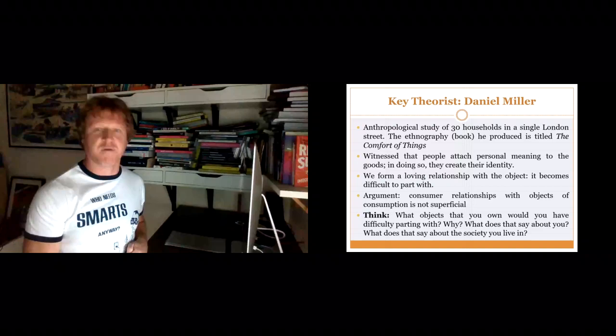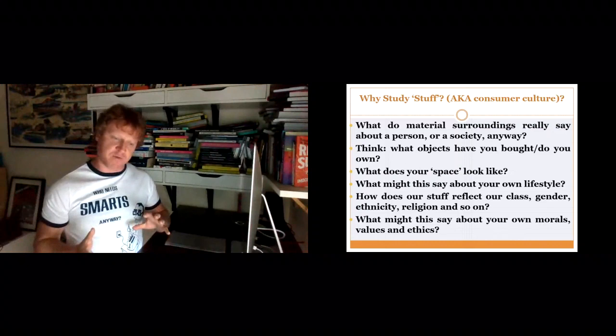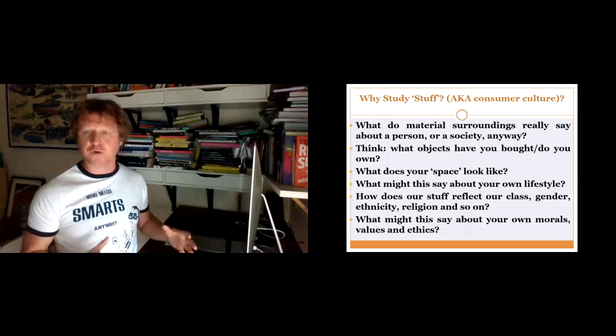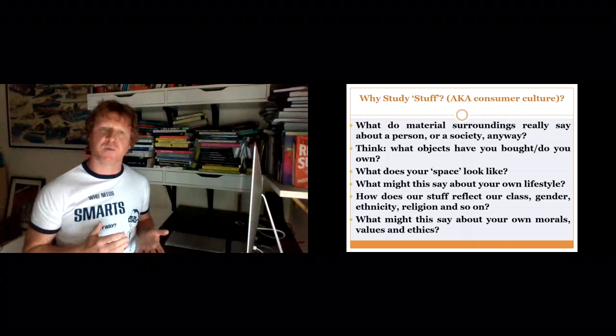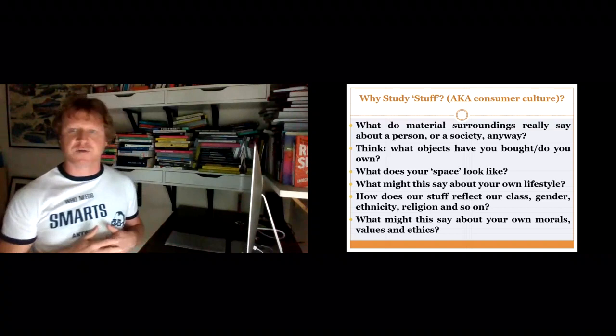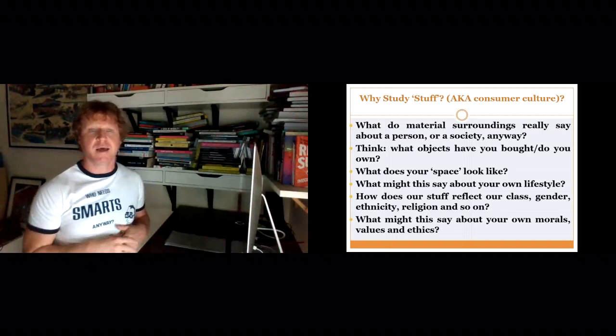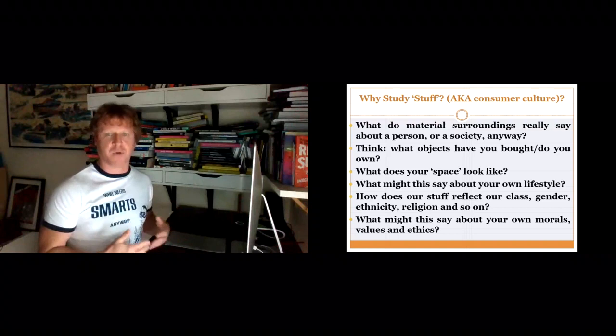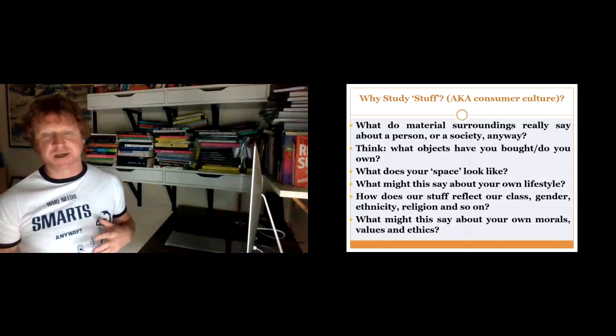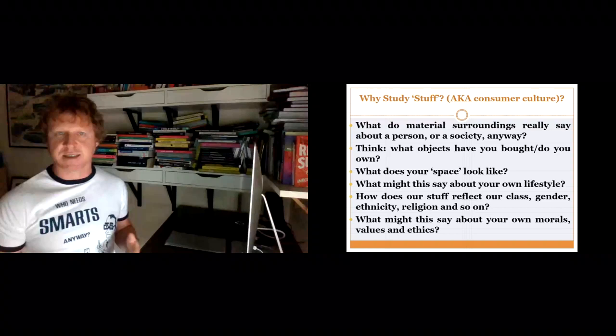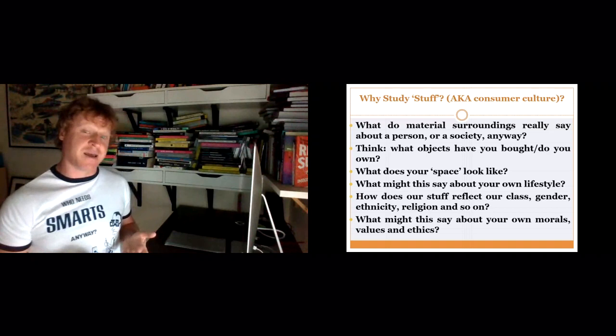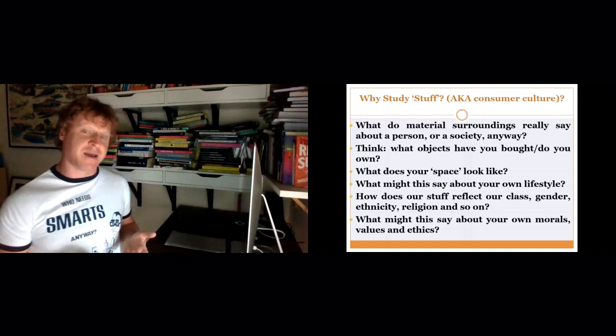So I think that's really worthwhile checking out if you want to move beyond the pessimism of the Frankfurt School. So in the next section, what I'm going to do is talk about some other points of view that look at consumer culture a little bit more in terms of relations between different groups and the different meanings they have. So in terms of asking some sociological questions here, why we should study stuff, i.e. the things we consume. What do material surroundings really say about a person or society anyway? What objects have you bought and what do these things say about you? What does the space that you live in look like? And what does this kind of stuff say about your own lifestyle, your own attitude towards other people, other things, the environment? How do things like class, gender, ethnicity, religion and all these kind of stuff become expressed through the things that we buy and the practices in terms of pop culture and consumer culture that we pursue? And what does this say about your own morals, values and ethics? And I'll talk a little bit about that in part four after I talk about subcultures and semiotics in the next video.